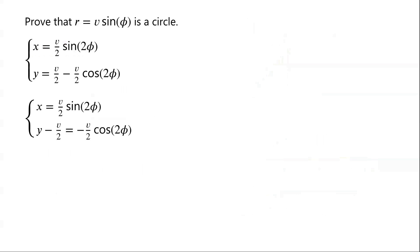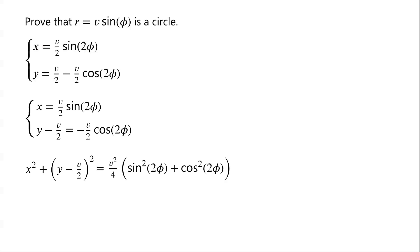Which means that y minus v/2 equals negative v/2·cos(2φ). Now we consider x² plus (y minus v/2)². x² equals v²/4·sin²(2φ), and (y minus v/2)² equals v²/4·cos²(2φ). So x² plus (y minus v/2)² equals v²/4·(sin²(2φ) plus cos²(2φ)). We know that sin²(2φ) plus cos²(2φ) equals 1, thus x² plus (y minus v/2)² equals v²/4, which can be written as (v/2)².